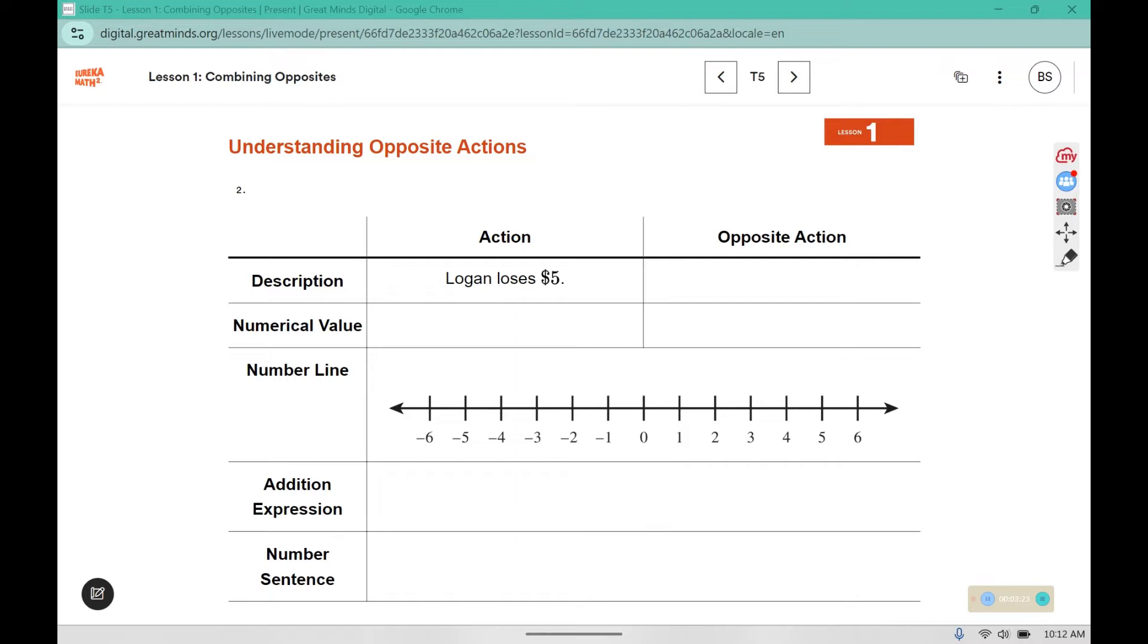In this one, it says Logan loses $5. The opposite would be to gain $5. If you lose $5, that's negative 5. And if you gain, that would be positive 5. So we're going to start at 0 and head towards negative 5. And then we're going to go the opposite direction. Negative 5 plus 5 would be our expression, but our number sentence has an equal sign, and that puts us back at 0.